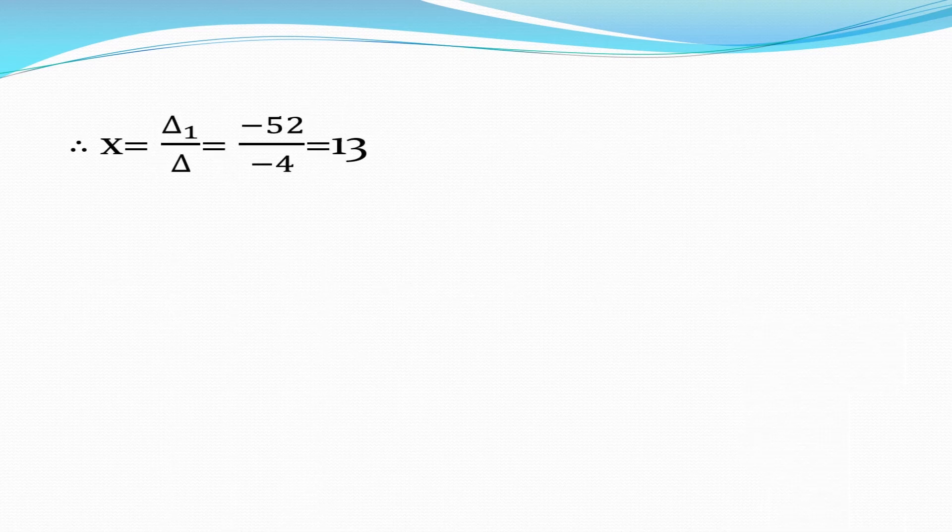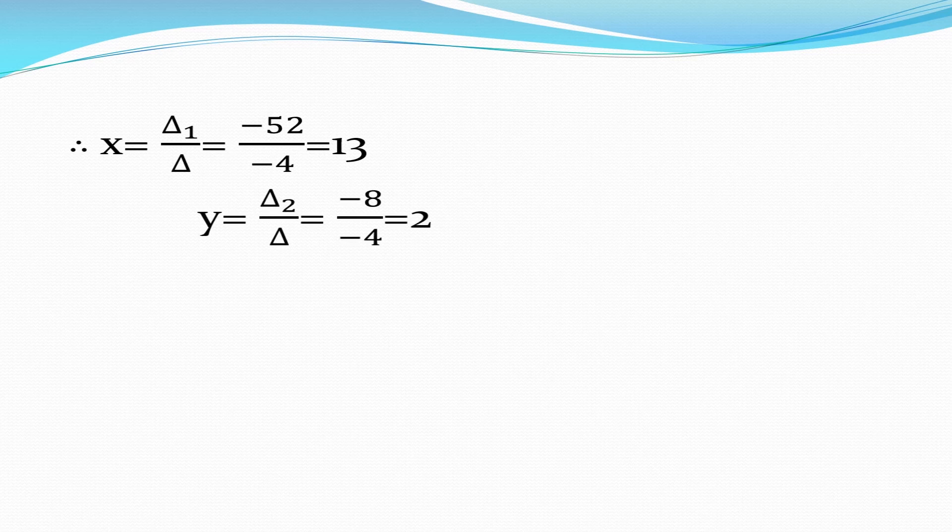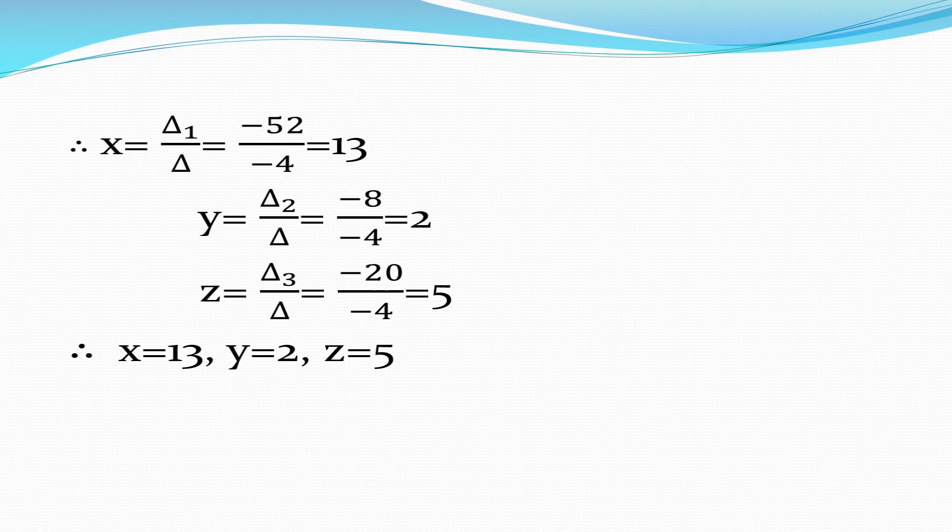So value of x is equal to delta 1 by delta which is equal to minus 52 by minus 4 which gives us 13. y is equal to delta 2 by delta which is equal to 2 and z is equal to delta 3 by delta which is equal to 5. We can verify the answer by plugging the value in any one given equation. Thank you.